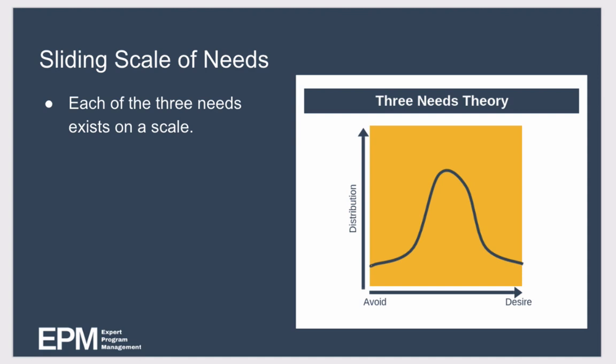So let's examine each of the three needs in turn. But before we do, it's worth noting that each of these needs exists on a sliding scale, with most people being somewhere in the middle of the scale. For example, while some people may desire power, not everyone wants to be powerful at all costs. Similarly, while some people avoid the spotlight at all costs, most people enjoy a little praise. Most people don't exist at the extremes of each need, so each individual will be motivated to a greater or lesser extent by each of the three needs.